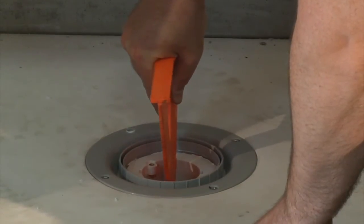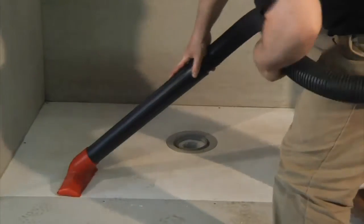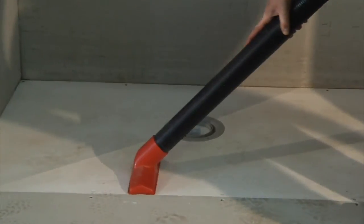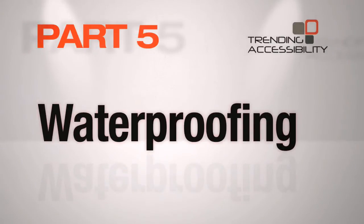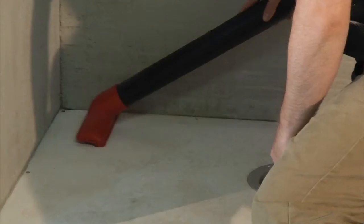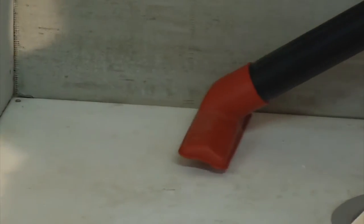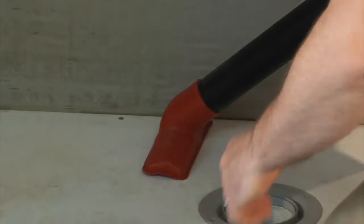After you clean up debris and vacuum away the dust from sanding, you're ready to apply the waterproofing. Part 5: Waterproofing. With your working area cleaned up and vacuumed well so that it's dust-free, you can begin waterproofing or tanking the bathroom.